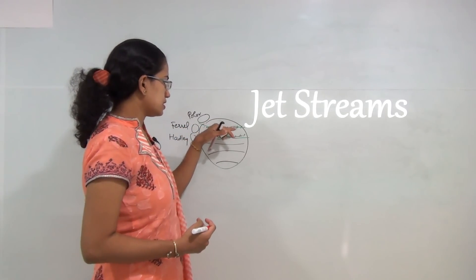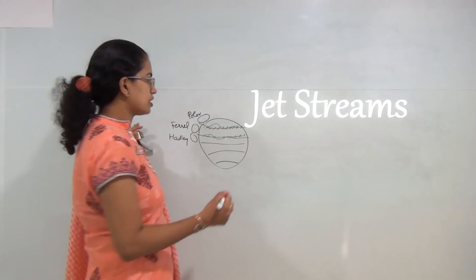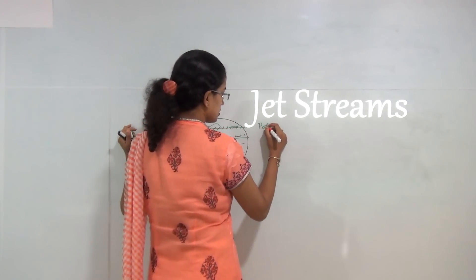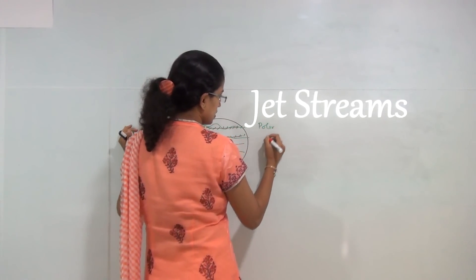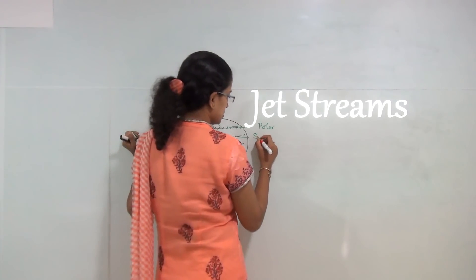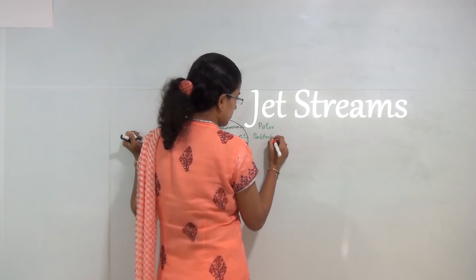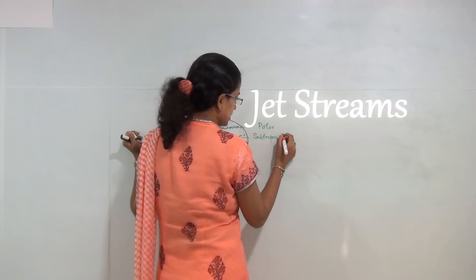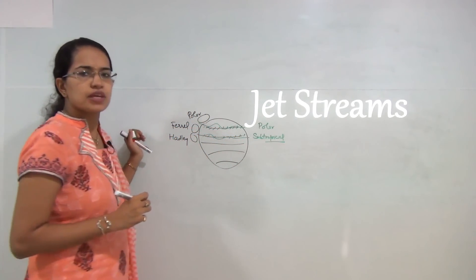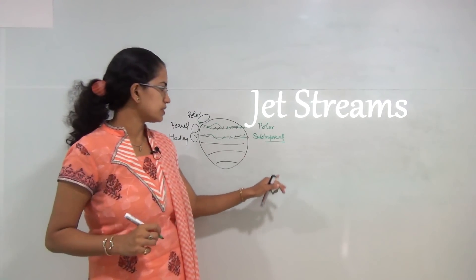The jet streams running towards the extreme north are known as polar jet streams. Then you have the subtropical jet streams, and in some cases the subtropical jet streams are replaced by the tropical easterly jet streams, which we will see how.